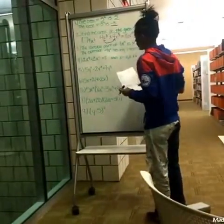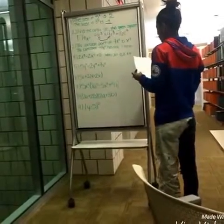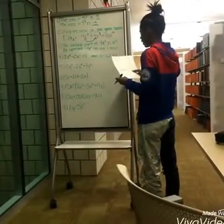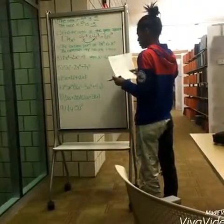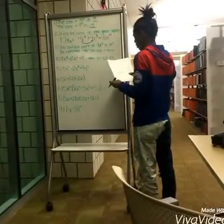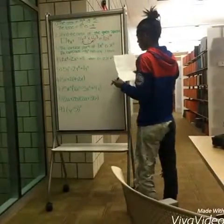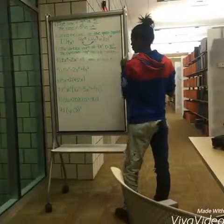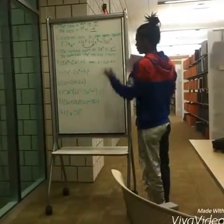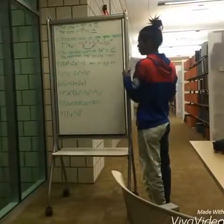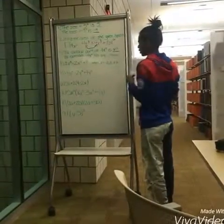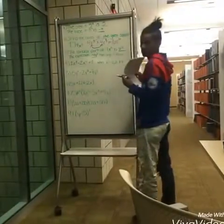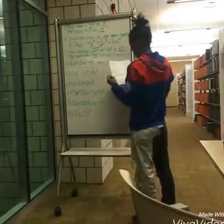For number three, it says find the variable part of 7x to the third power, and then find the expression — the expression negative 4x squared has only one term. When you're talking about the variable part, you talk about the x and not the three. This is true because there's only one term in this problem, which is negative 4x.